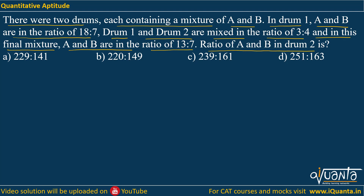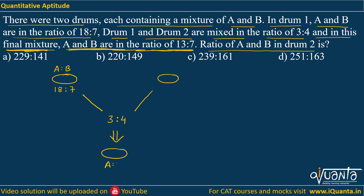So basically we have two drums — drum 1 and drum 2. In drum 1, A and B are in ratio 18:7. Drum 1 and drum 2 are mixed in ratio 3:4. Due to this we are getting a final mixture, and in this final mixture A and B are in ratio 13:7. We are asked to find the ratio of A and B in drum 2.